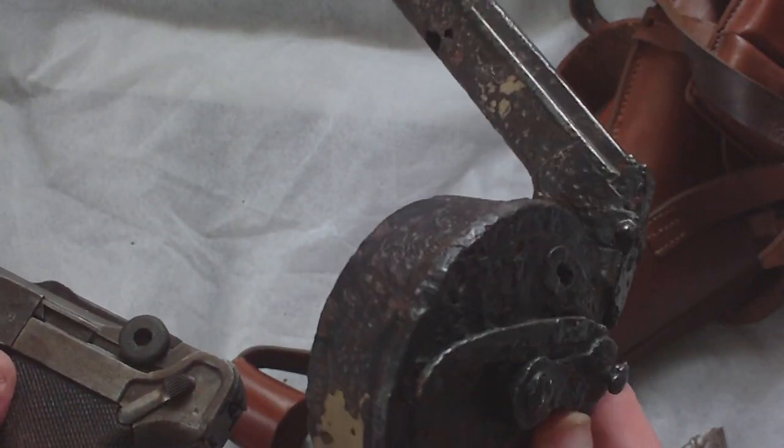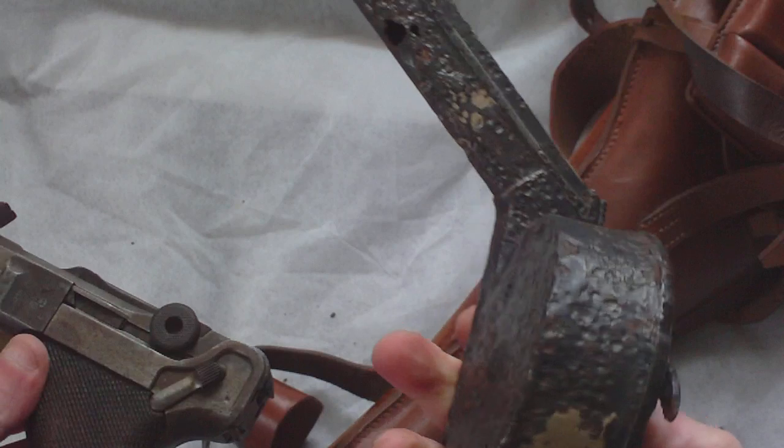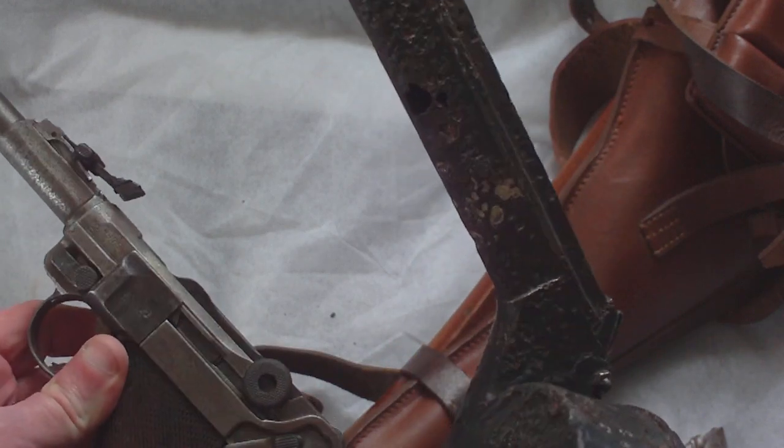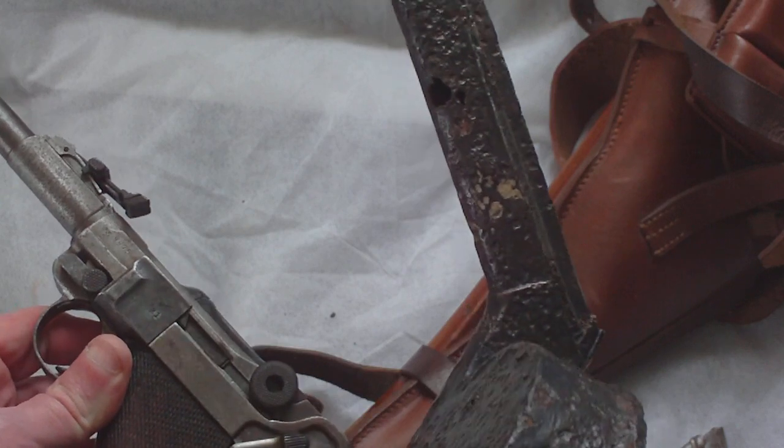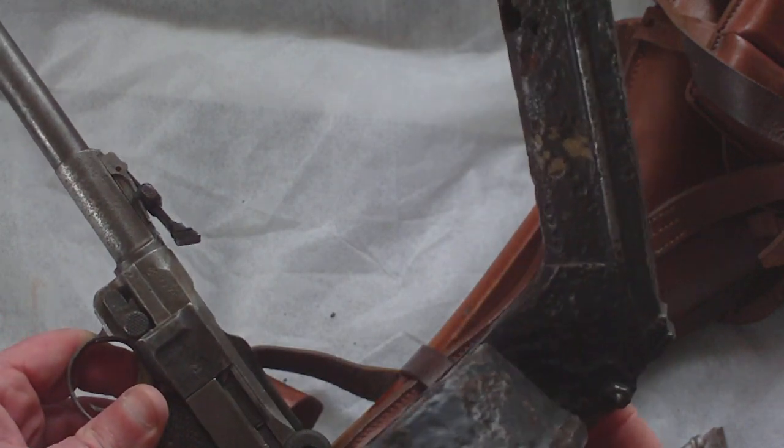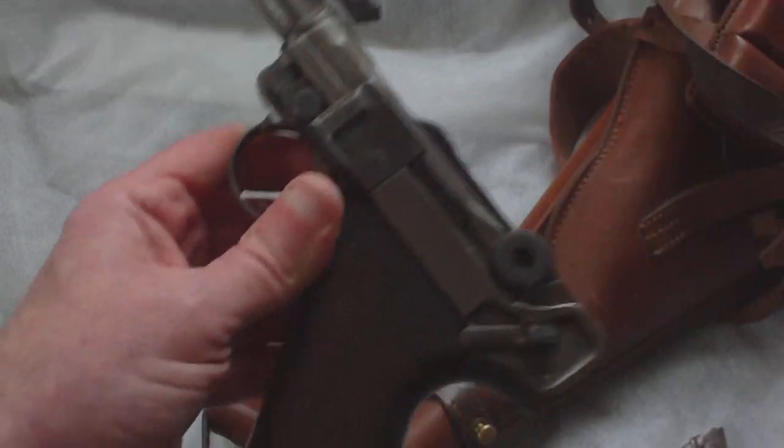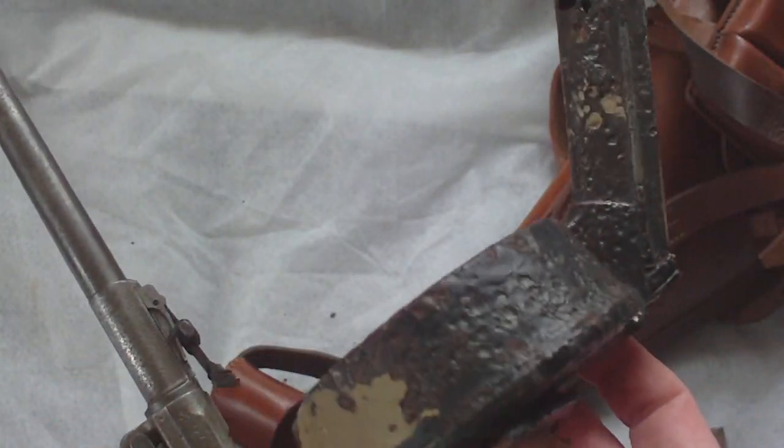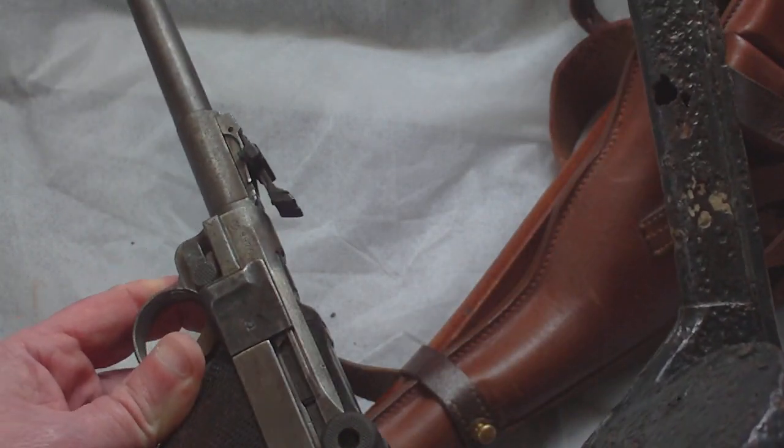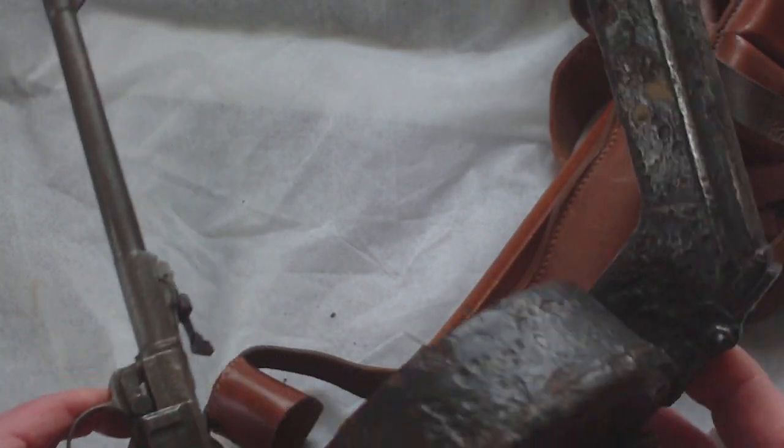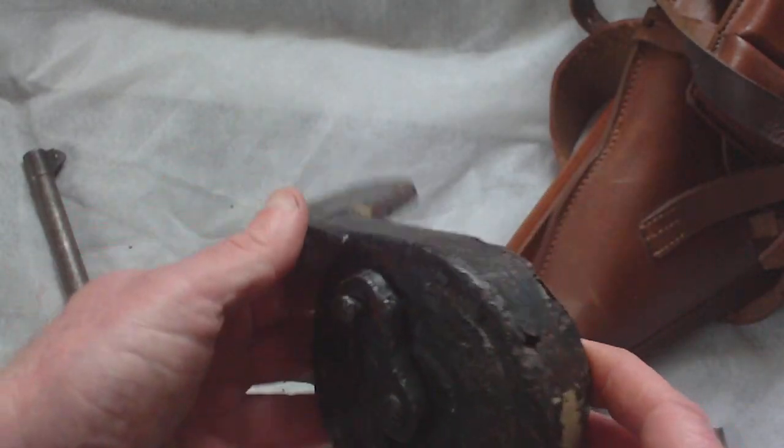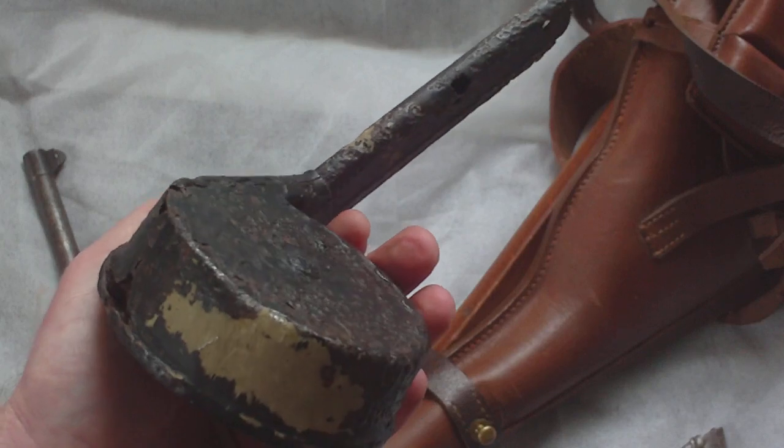But later on these came out, and the idea of these were they were to be issued with artillery Lugers to infantry, so that storm troopers in a battalion could have some heavy firepower. So in effect, an artillery Luger with one of these becomes the first assault gun, as it were. The same mag would later be used in the MP18 submachine gun.